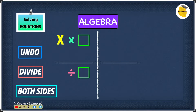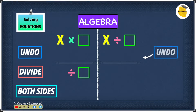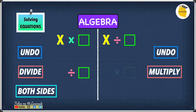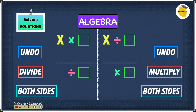Now let's have a look at division: x divided by any number. To undo this, we have to multiply it by that exact same number, because division and multiplication are inverse operations. And we need to multiply on both sides.